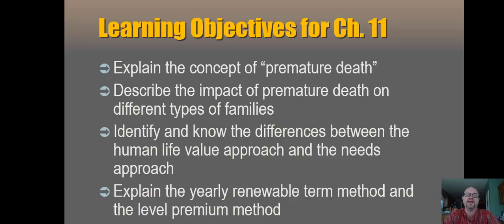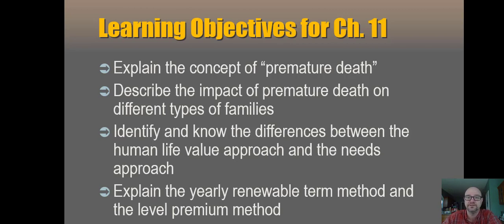We'll go ahead and talk about Chapter 11, which is life insurance. We've got to define this idea of premature death and talk about how it impacts different families in different ways based on structure. It comes down to how many dependents are relying on that person's income. The more dependents, the bigger a problem it's going to be if you lose that income — whether through premature death, disability, or unemployment. The only thing that's different is the duration. If I'm disabled, I'm hoping I'll eventually heal and get back to work. Most disability does resolve that way, but permanent disability is the same problem as premature death, except you also have additional medical expenses.